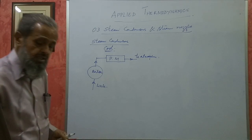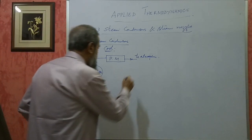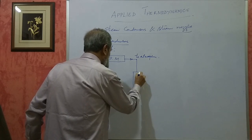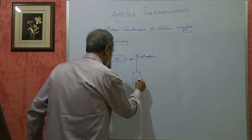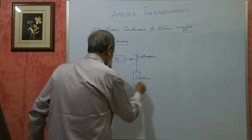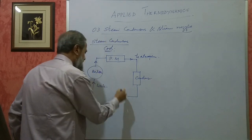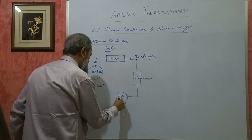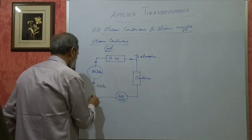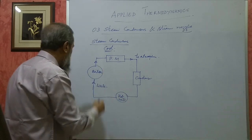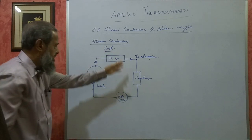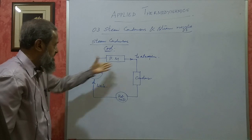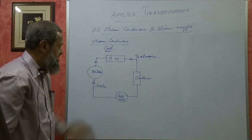If it is a condensing type plant, the steam from the prime mover is passed into a condenser, where it is cooled and then it comes to the hot well. From the hot well it is recirculated into the boiler, making it a closed cycle. Otherwise, it will be an open cycle if the condenser is not there.